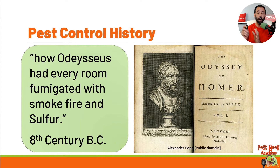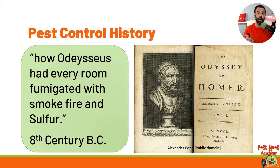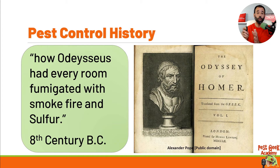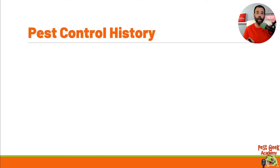Going back to the building of the Panama Canal and before that in Cuba during the Spanish-American War, soldiers were dying from yellow fever. It was discovered at the turn of the century that you could control the mosquitoes causing yellow fever by applying sulfur. During the building of the Panama Canal, sulfur was extensively used along with integrated pest management to control mosquito populations so they could complete construction.